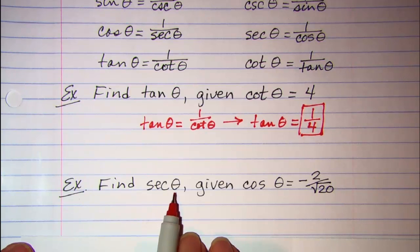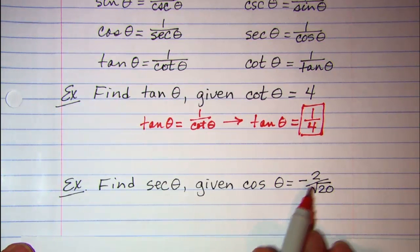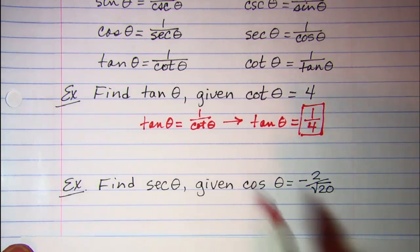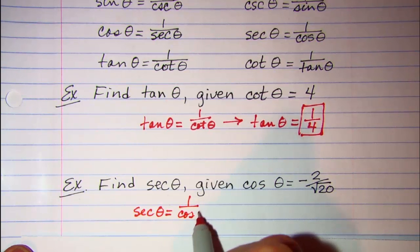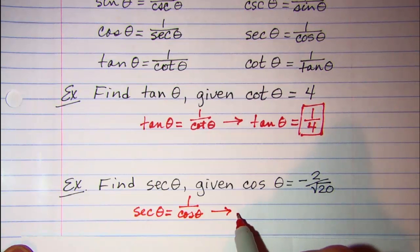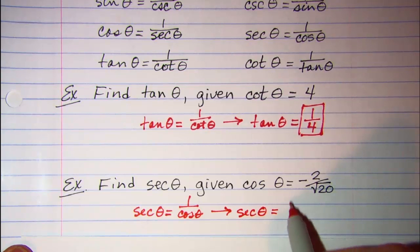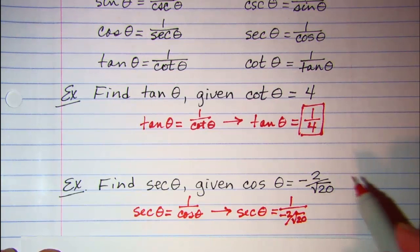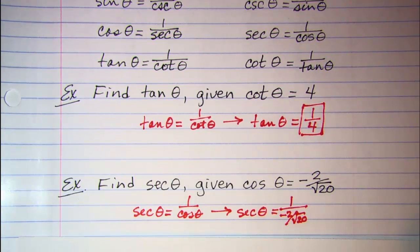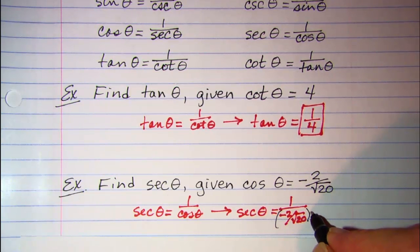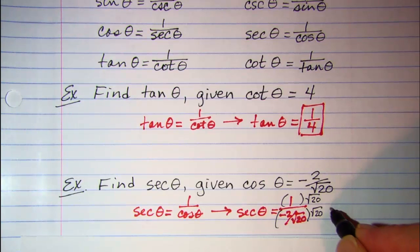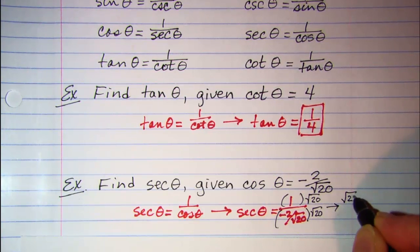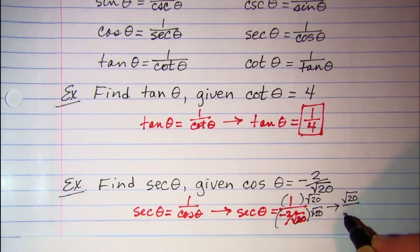Another one. Find the secant of theta given that the cosine of theta is negative 2 divided by the square root of 20. Well, secant theta is equal to 1 over cosine theta, so secant theta is 1 over negative 2 divided by square root of 20. We can simplify this complex fraction by multiplying the top and the bottom by the square root of 20, giving us square root of 20 over negative 2.